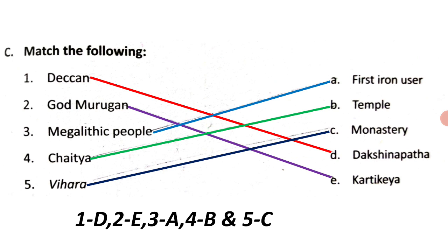Section C: Match the following. 1. Deccan — D. Dakshinapatha. 2. God Murugan — E. Kartikeya. 3. Megalithic people — A. First Iron Users. 4. Chaitya — B. Temple. 5. Vihara — C. Monastery.